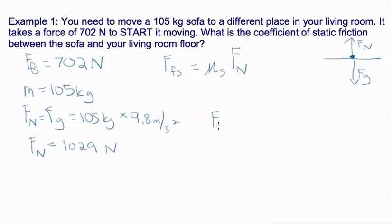So now if we plug into our static friction force equation, we have 702 newtons equals μs times our normal force. So our coefficient of static friction is equal to 702 divided by 1029.